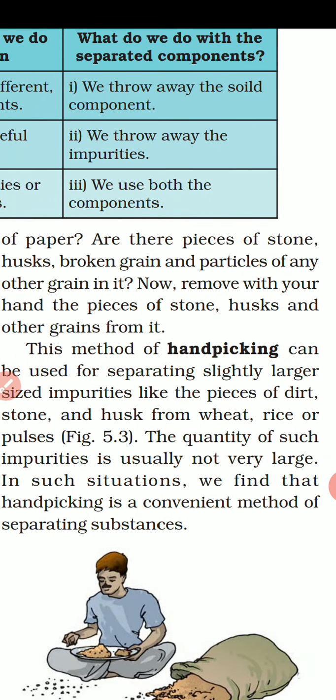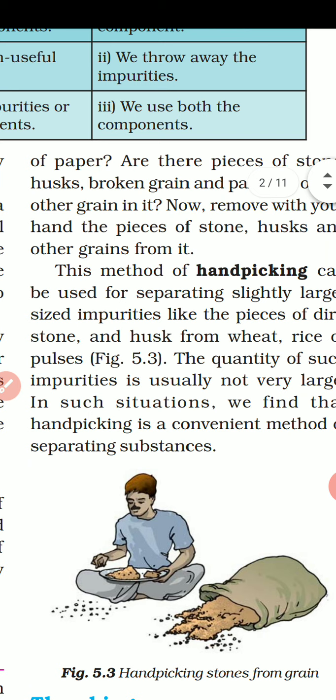Now remove it with the help of your hand — take out the pieces of stone, husk, and other grains. You can help your mother by picking stones from the rice. Wherever you feel like it, take out a little jeera or rye — whatever kitchen product is available, ask your mother and she will give you the work to separate by hand picking. You separate the non-useful substances and throw them away because they are not useful.